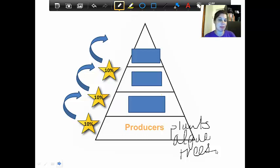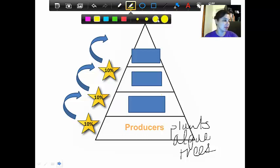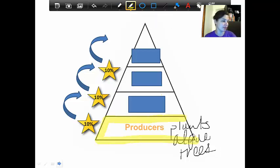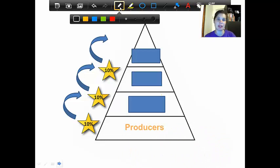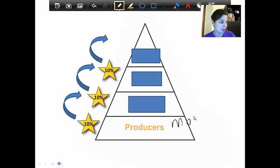The reason that they are at the bottom of the pyramid is you'll notice that this section of the pyramid has the biggest portion. This is the widest portion of the pyramid down here where the producers are. What that means is that is the place where we have the most energy. Because the producers are the organisms that get the energy from the sun, they have the most energy of all the different organisms in a food chain. So we're going to add to producers: most energy.